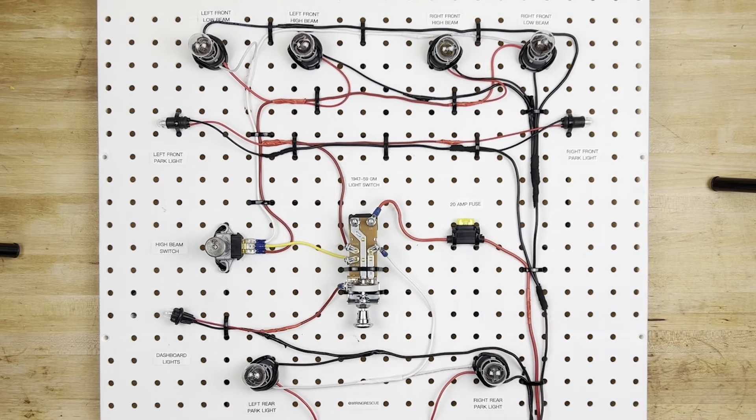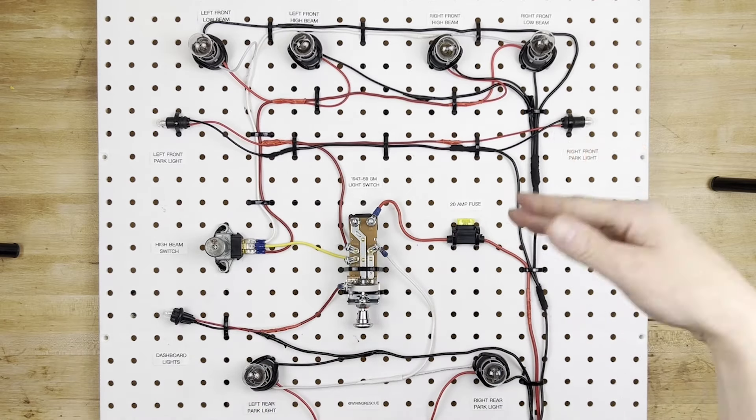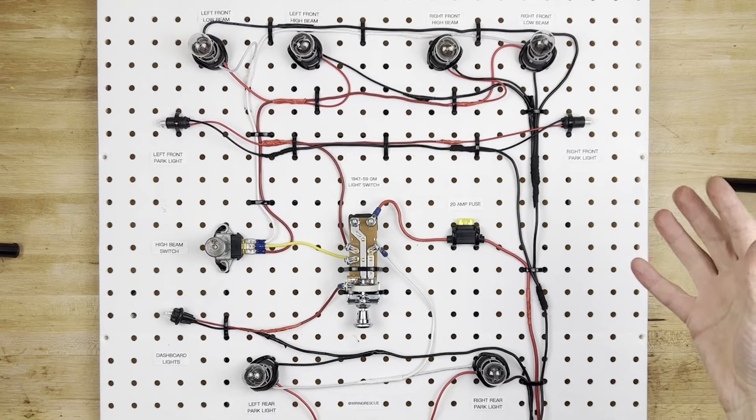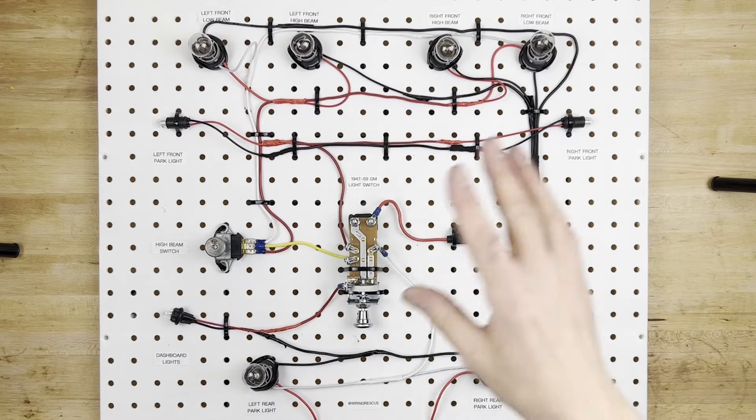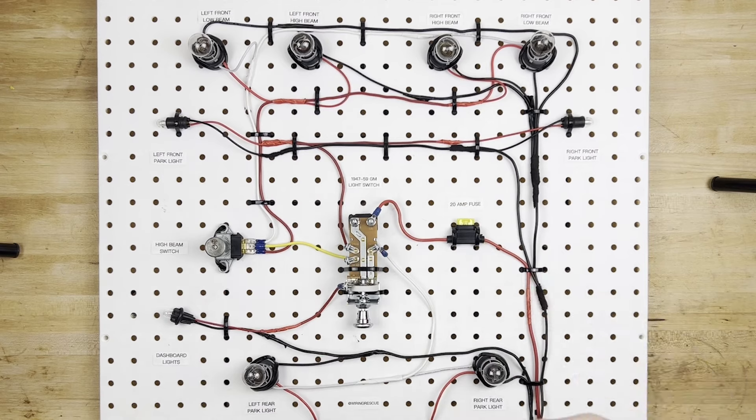So this wire could actually come straight from a battery if you want all of this available all the time, or you could technically run it off of a master relay or a master fuse box, depending on how you want the whole thing wired. I have a bunch of other videos on that sort of stuff, so definitely check out my wiring playlist.